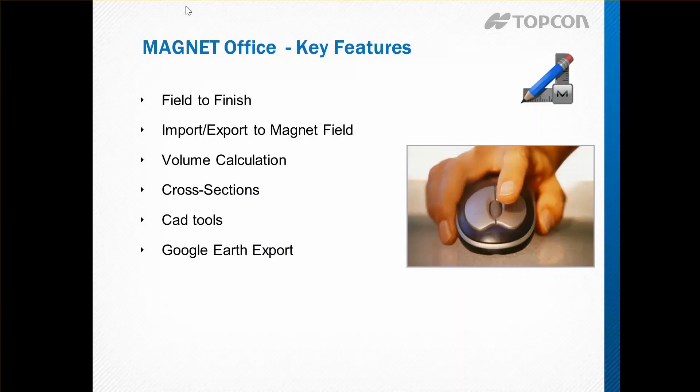The features include field to finish — sending a field survey through to a finished plot — using Magnet Office to import and export field and design information, calculate volumes, produce cross sections, produce simple CAD designs, and finally export information for visual representation on Google Earth.